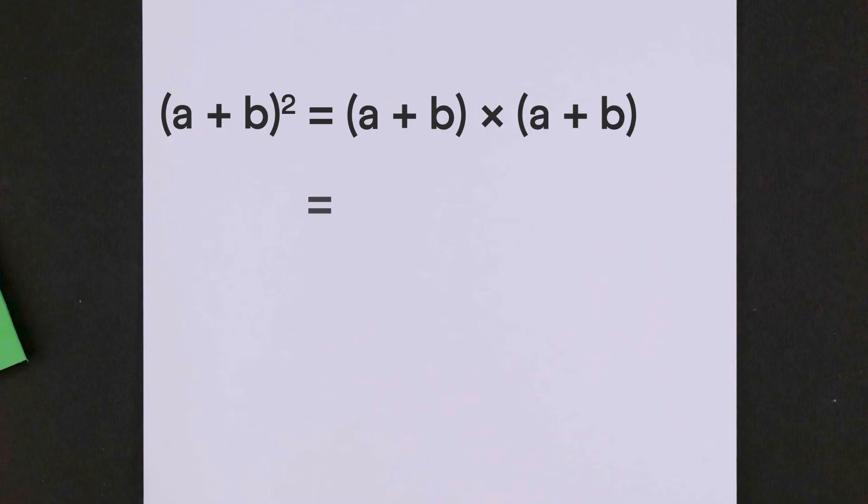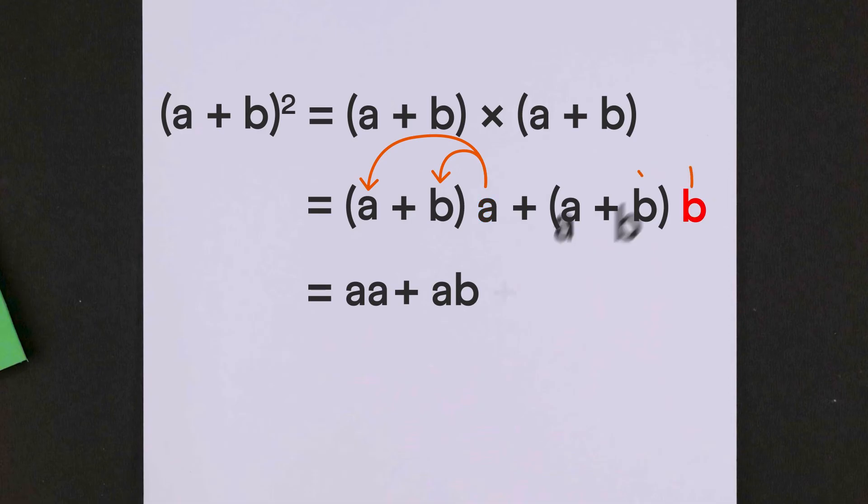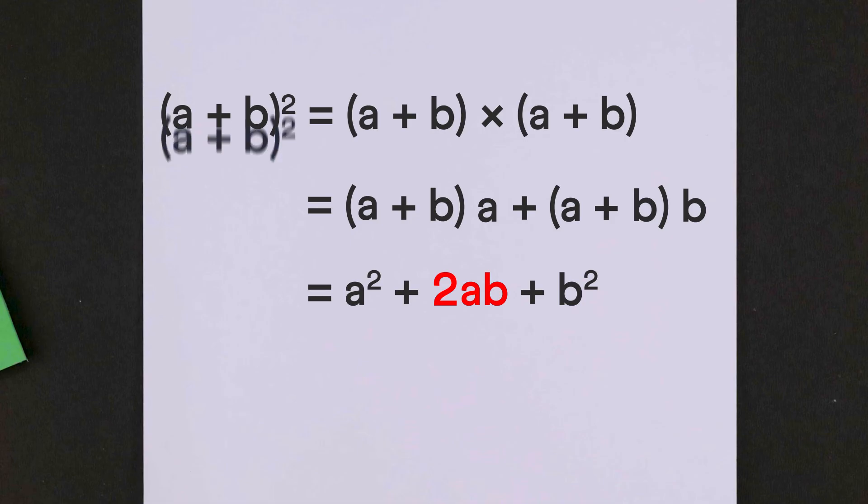Similarly, here we can distribute the first bracket to a and then to b. Now, we can again apply the distributive property to these two terms. Distribute a here to a and b and b here to this a and b. Finally, we get a squared plus ab plus ab plus b squared. Adding these two like terms, we get our identity. a plus b whole squared is equal to a squared plus 2ab plus b squared.